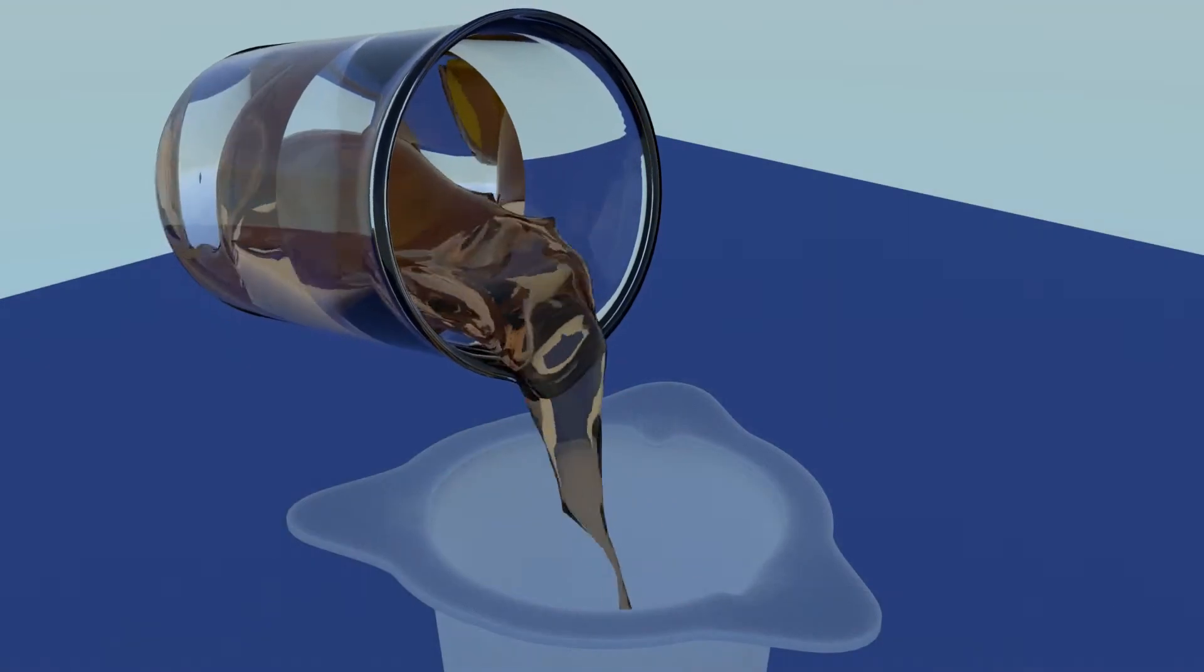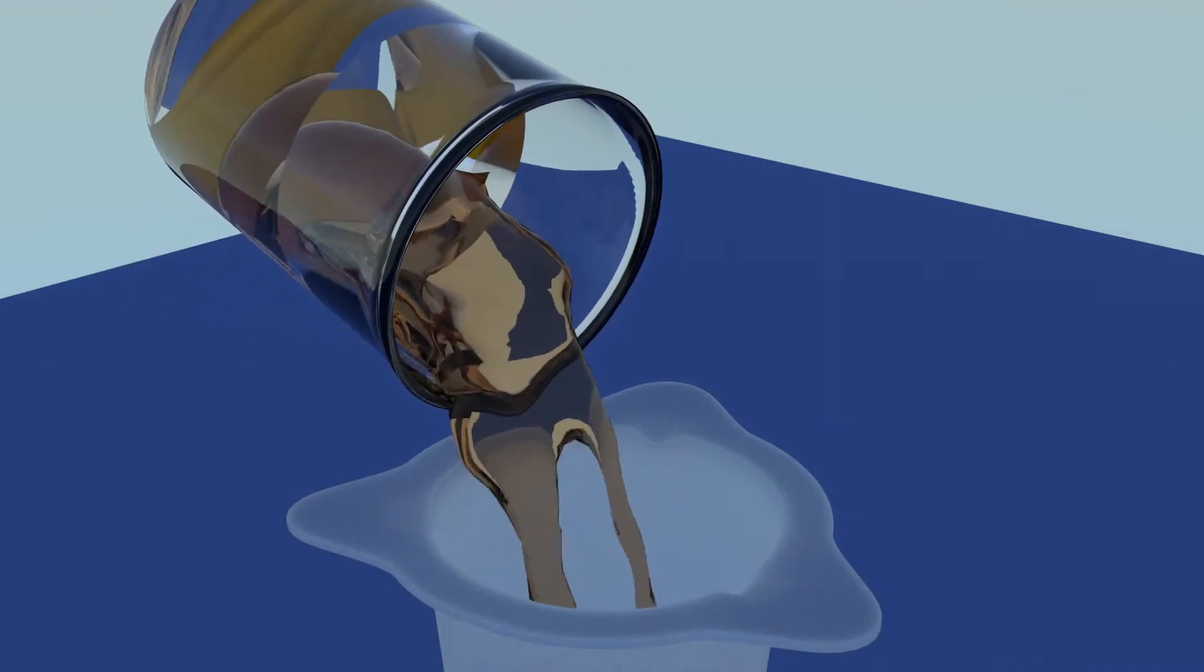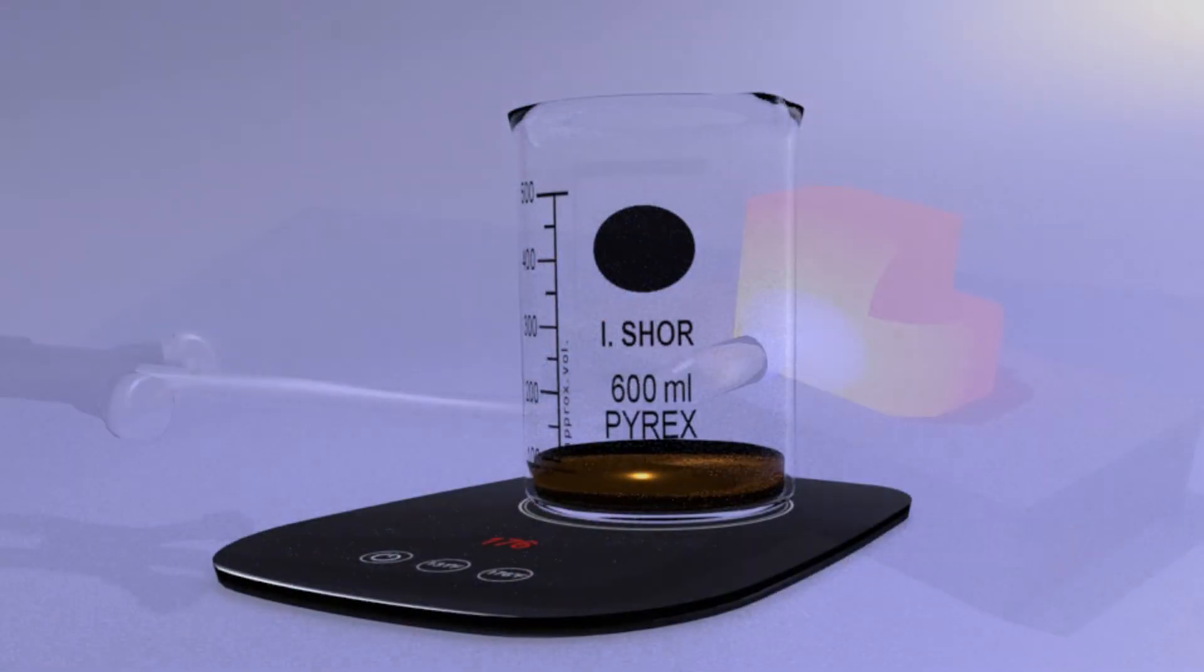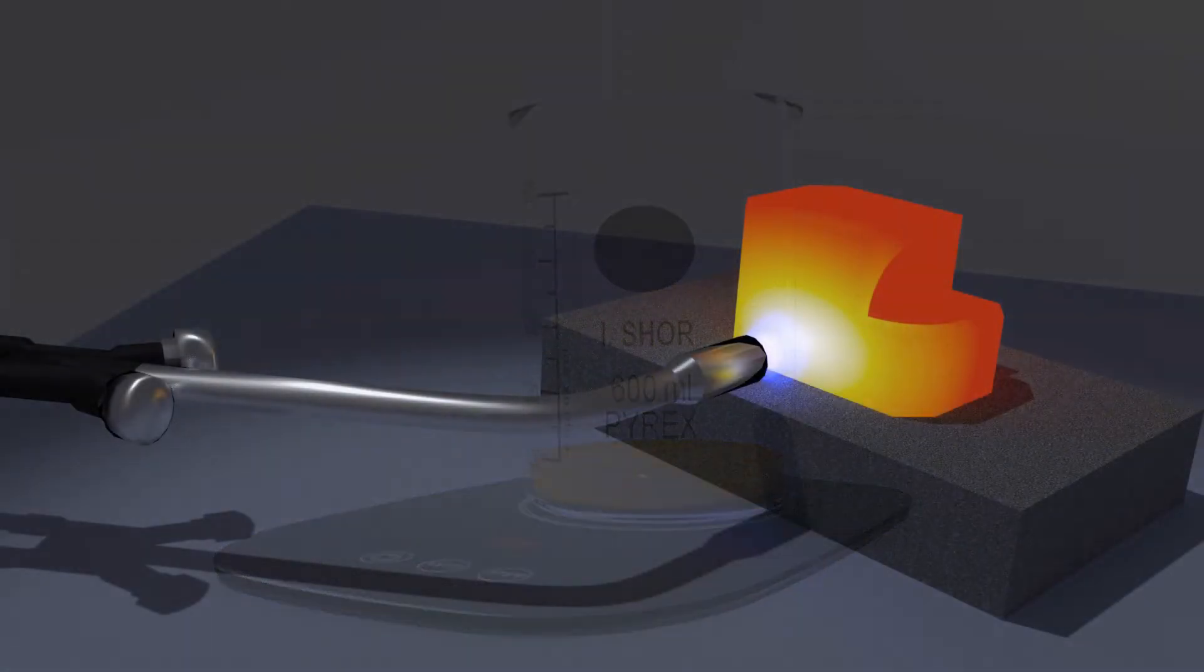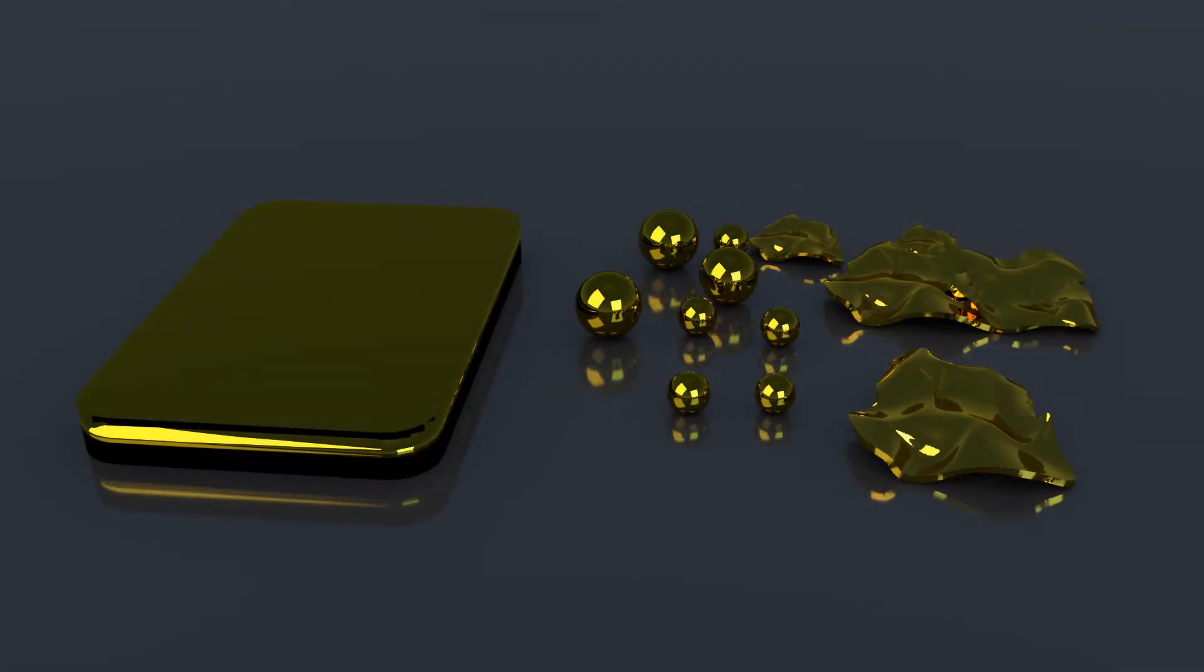The solution is then decanted to recover the gold mud. The mud is dried and then melted. 100% recovery with zero losses is typical, and typical purity is at least 99.95%.